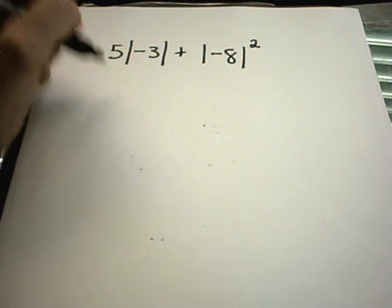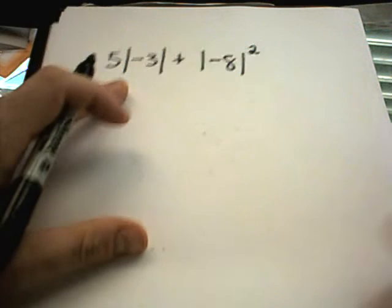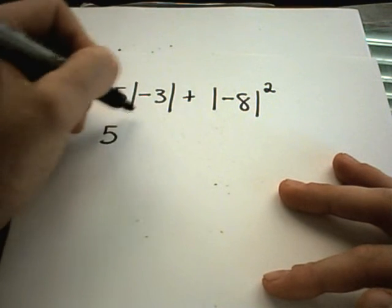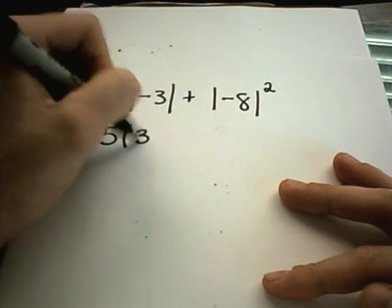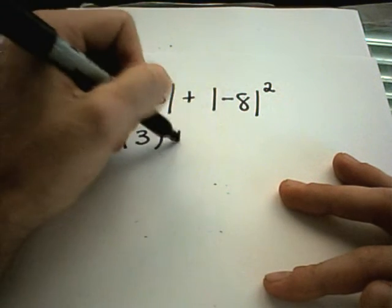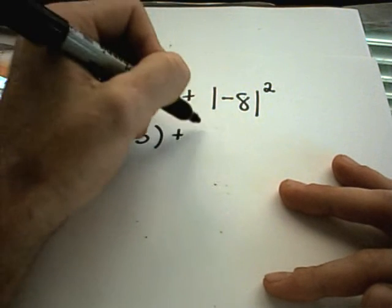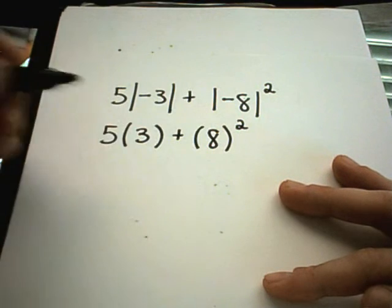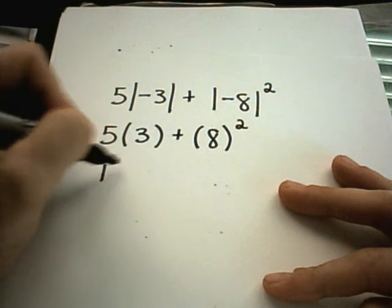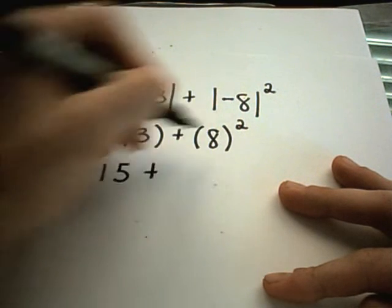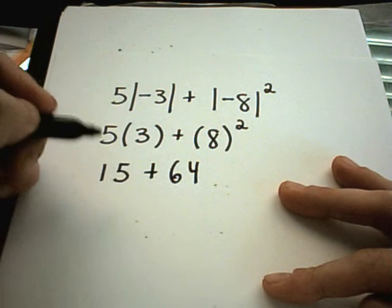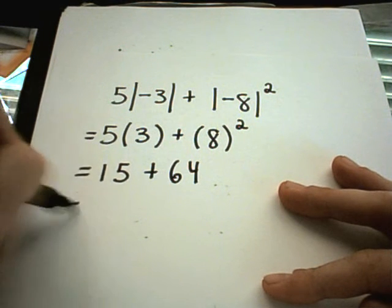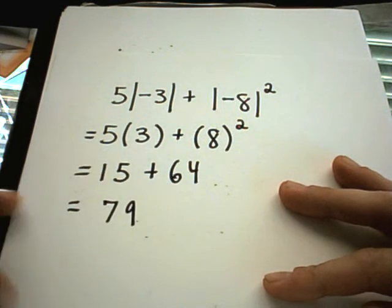Alright, well, in this case, we're going to do just the same thing. We'll simplify down our absolute value. So the absolute value of negative 3, that's going to turn into just positive 3. Plus the absolute value of negative 8 is just positive 8. And we still have to square that. 5 times 3 is 15. 8 times 8 is 64. If we add these, we're going to get 79. And that's our solution.